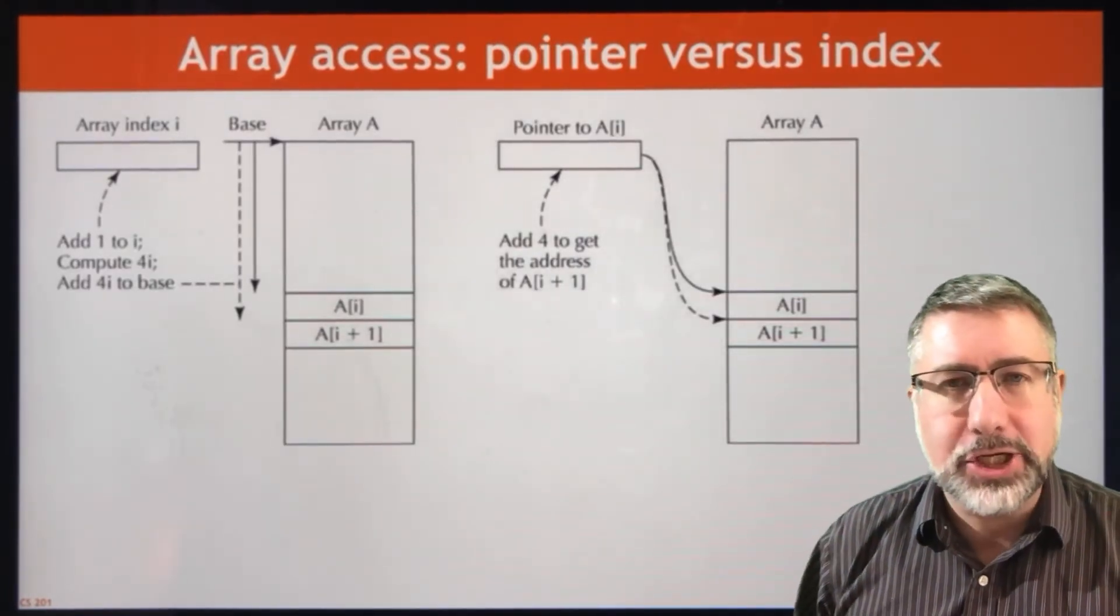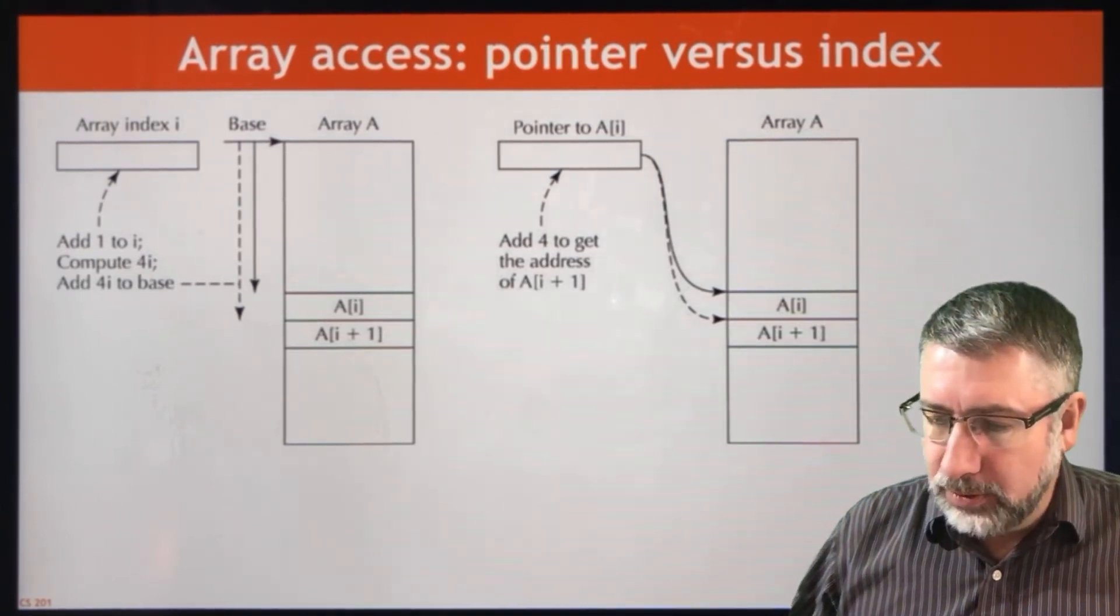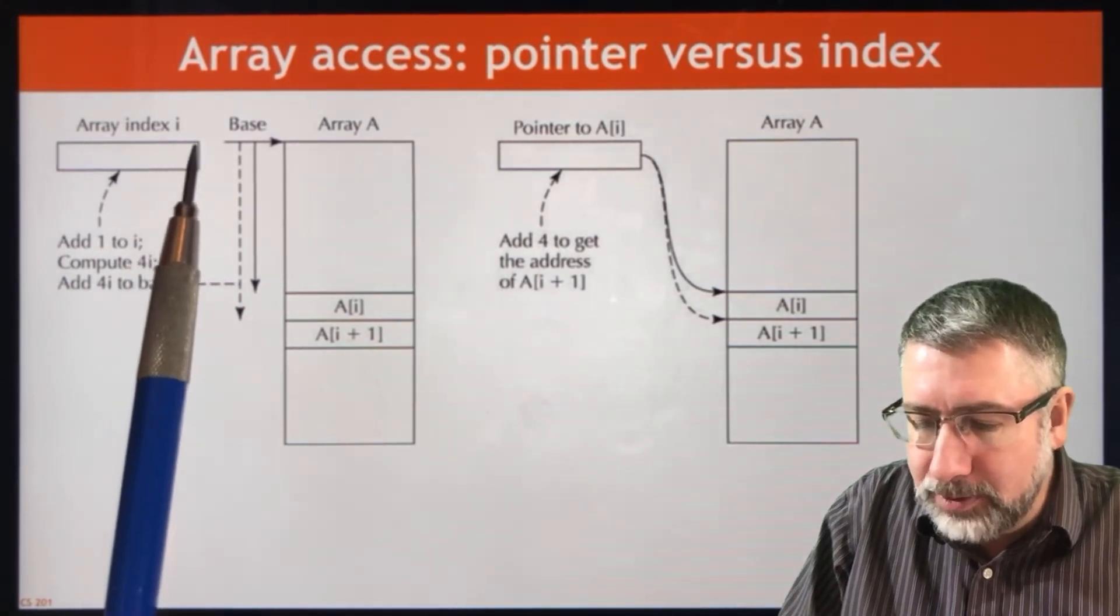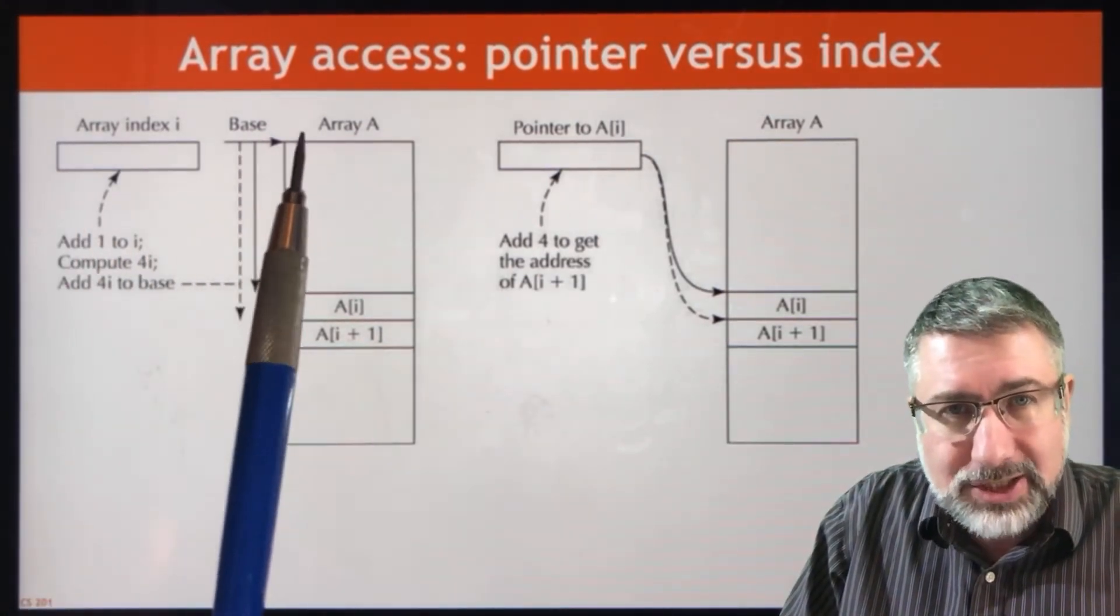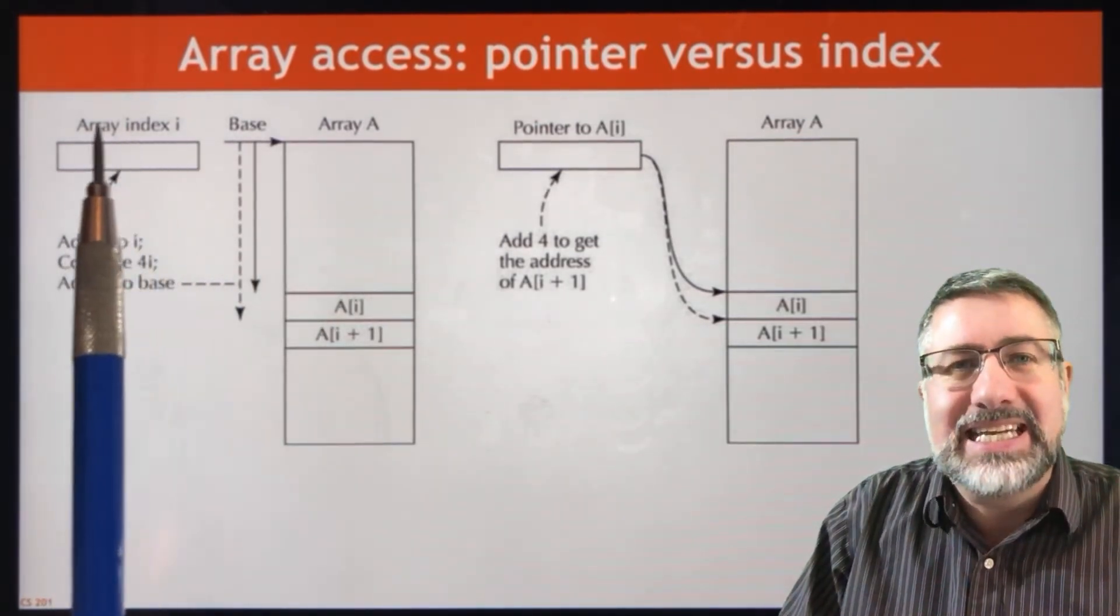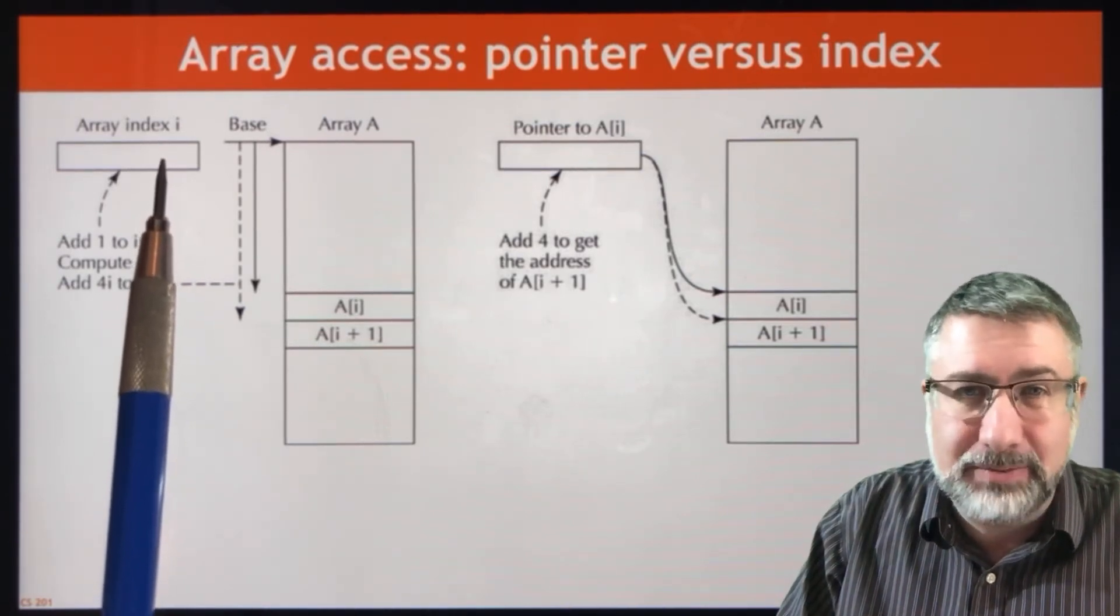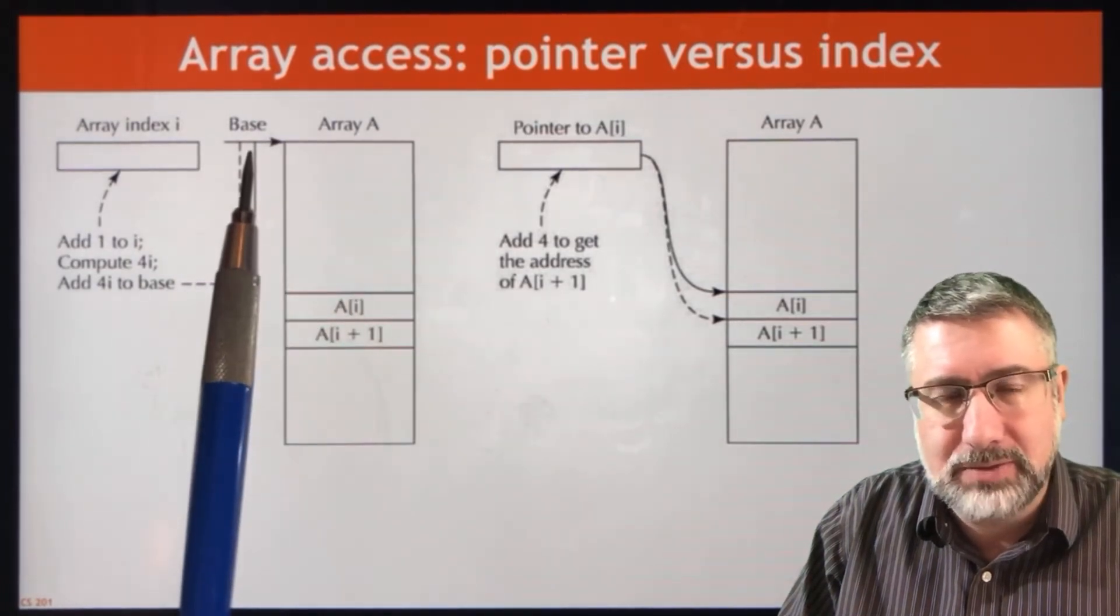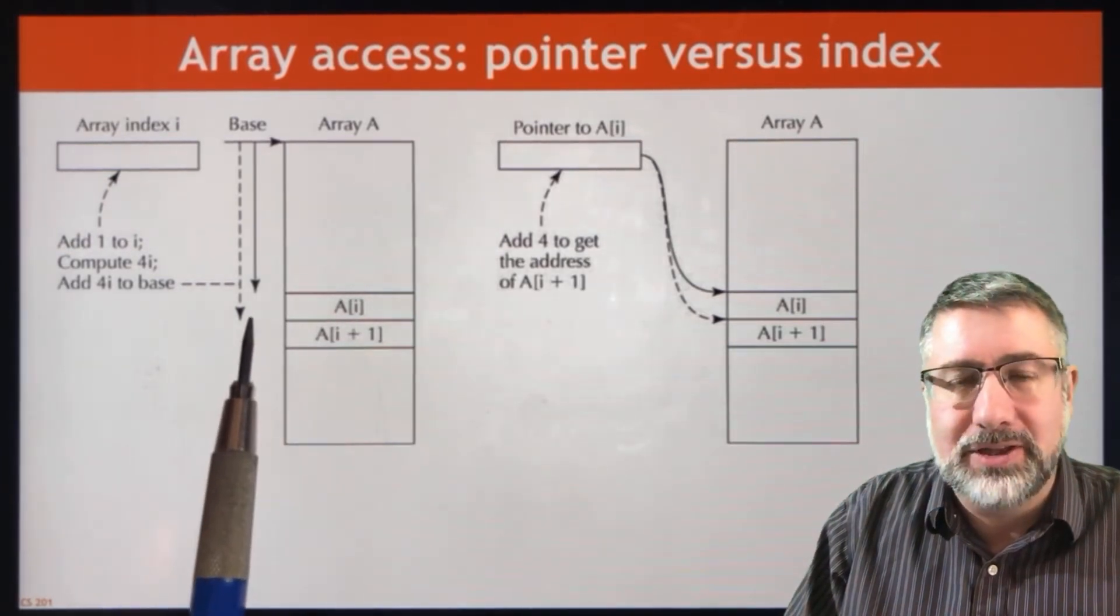These are visual representation of these two different approaches, the index versus a pointer. So the index process says we're going to keep an array, or we're going to keep the register that contains the base address or the first address in the array. And we're going to keep another register that contains the index of the element we're interested in. So if I want the fifth element in the array, I would say the base is this address, whatever it happens to be, I'd add five elements. And then I'd be pointing at the fifth element in the array.